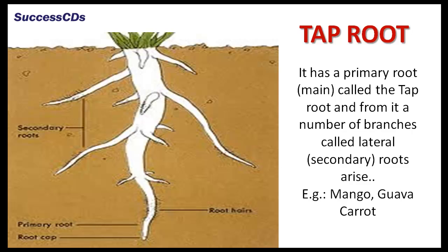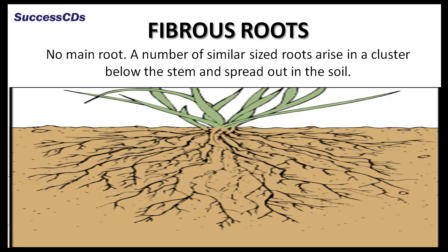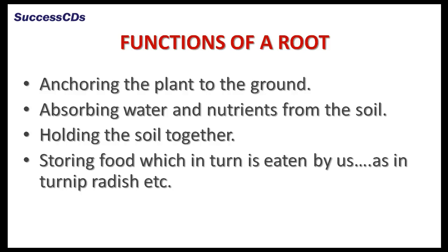In plants like mango and carrot, there is a primary root called the taproot, and from it a number of branches called lateral roots arise. Plants like wheat and grass do not have a main root; a number of similar sized roots arise in a cluster below the stem and spread out in the soil. Roots help in anchoring the plant to the ground, absorbing water and nutrients from the soil, holding the soil together, and storing food, which in turn is eaten by us, as in turnip and radish.